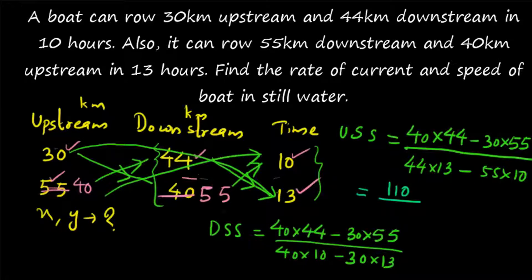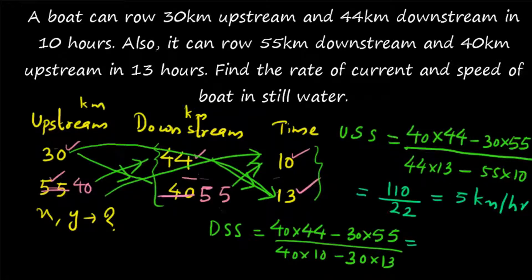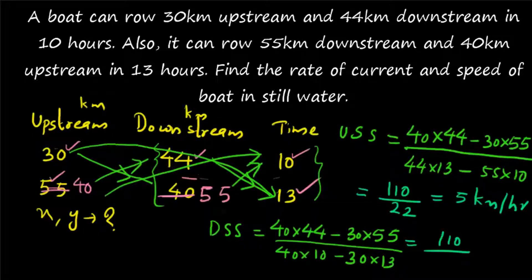44 × 13 − 55 × 10 = 22. So upstream speed = 110 ÷ 22 = 5 km/h. Downstream speed: the numerator is again 110, and 40 × 10 − 30 × 13 = 400 − 390 = 10. So downstream speed = 110 ÷ 10 = 11 km/h.